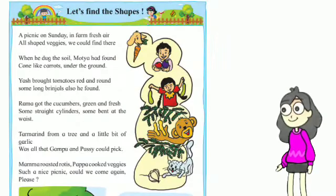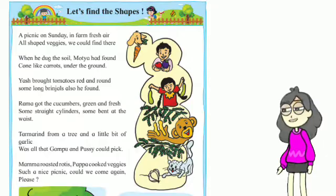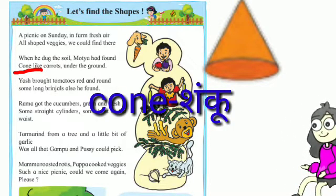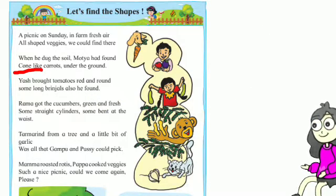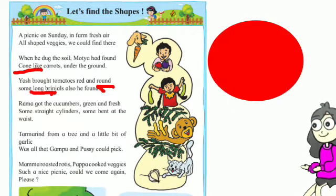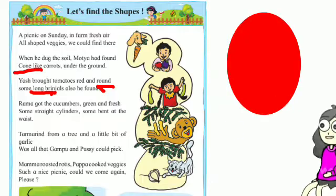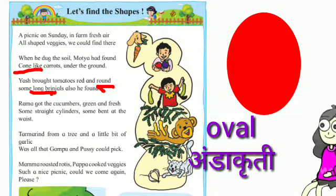Now students, let's find the shapes in this poem. Motha had found a carrot — this is cone shape. And the tomatoes — this is a round shape. Some long brinjals — long brinjal shape means oval shape.